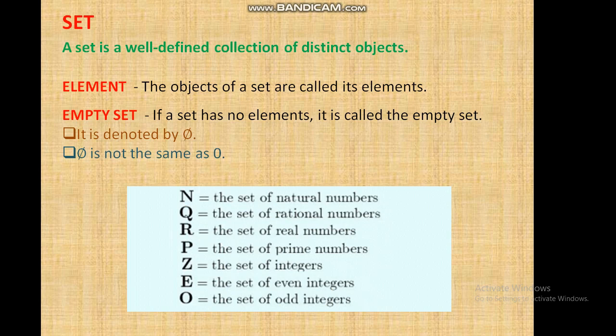The set of all rational numbers is represented by Q. The set of all real numbers is represented by R. The set of all prime numbers is represented by P. The set of all integers is represented by Z. The set of all even integers is represented by E. The set of all odd integers is represented by O.